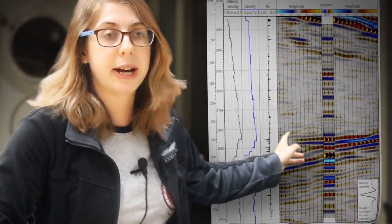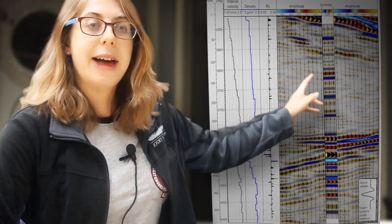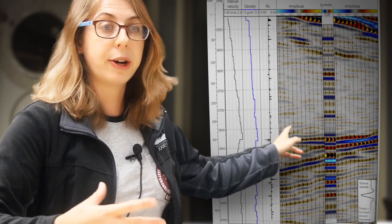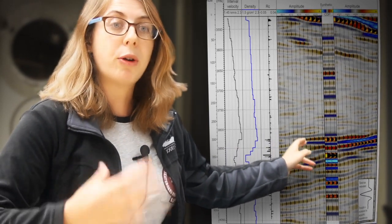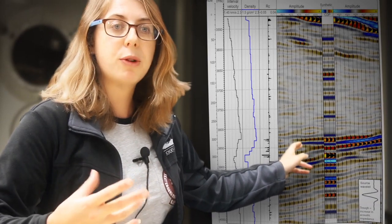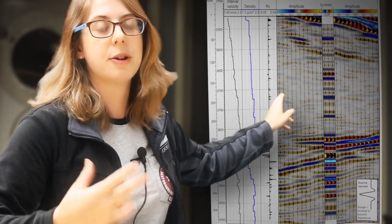This is a real seismic reflection section from the Hikarangi margin where we're drilling in Expedition 375. And the red and the blue lines that you can see here are echoes coming back from different rock layers in the earth. When the echoes are really bright it tells us we've got big changes in the rock properties. And when they're rather muted and low it tells us that things aren't really varying.